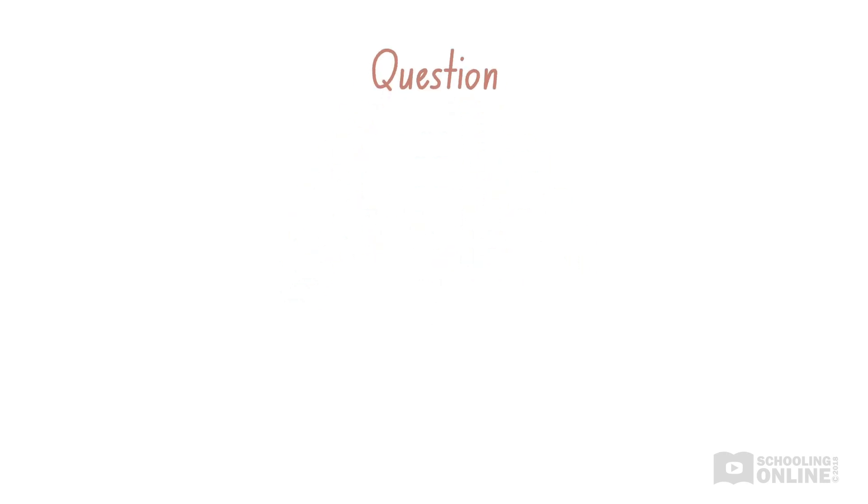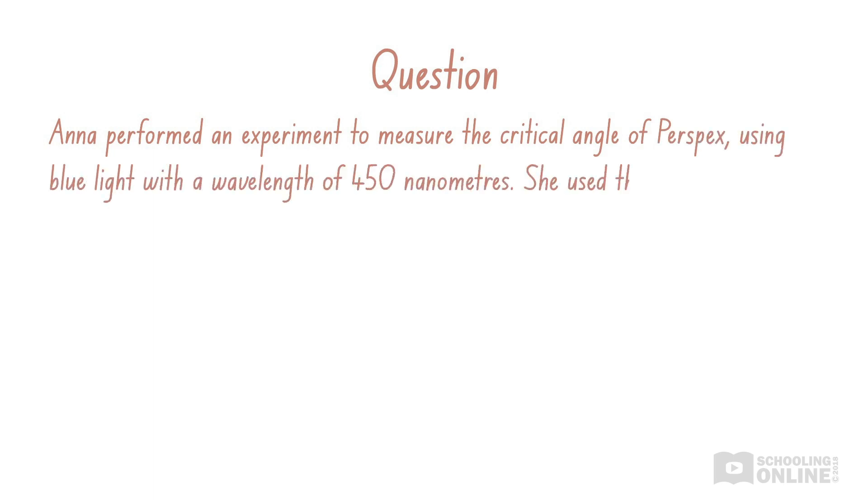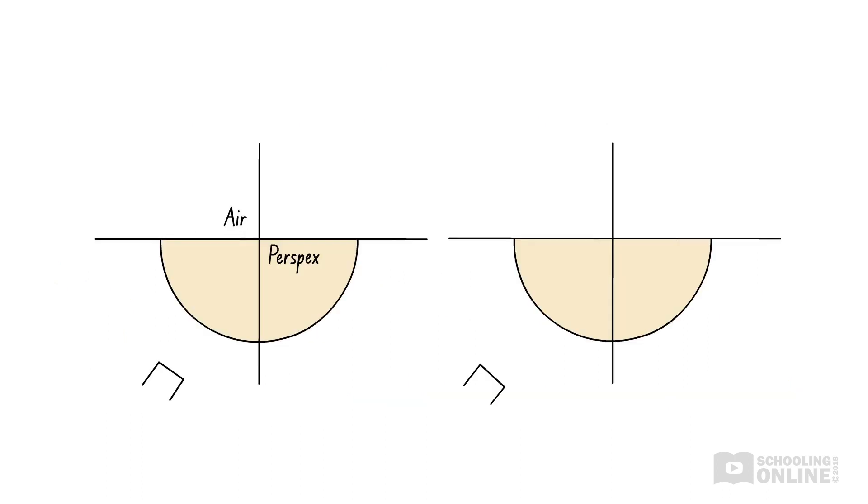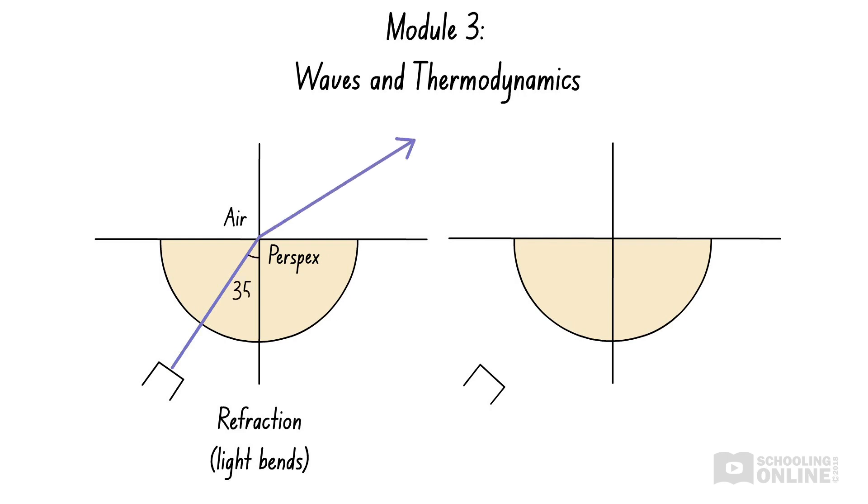Before we finish the video, let's look at a sample question. Anna performed an experiment to measure the critical angle of perspex using blue light with a wavelength of 450 nanometres. She used the following method. Pause here to read the method for yourself. You might have performed this experiment in Module 3, Waves and Thermodynamics, or in Year 10 Science. Remember, light bends when it travels from one material into another, because objects such as water, glass and perspex cause light to slow down. In this scenario, the light bends so much that it travels along the surface of the perspex. The angle at which this occurs is called the critical angle.